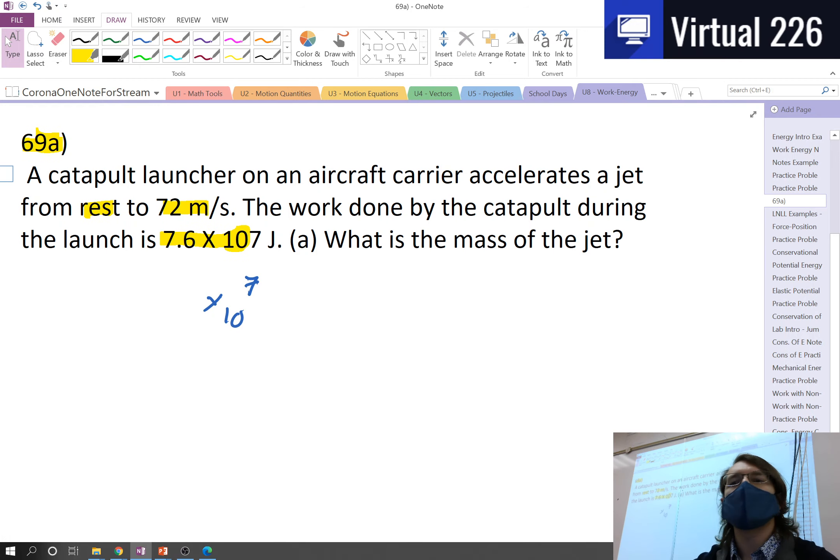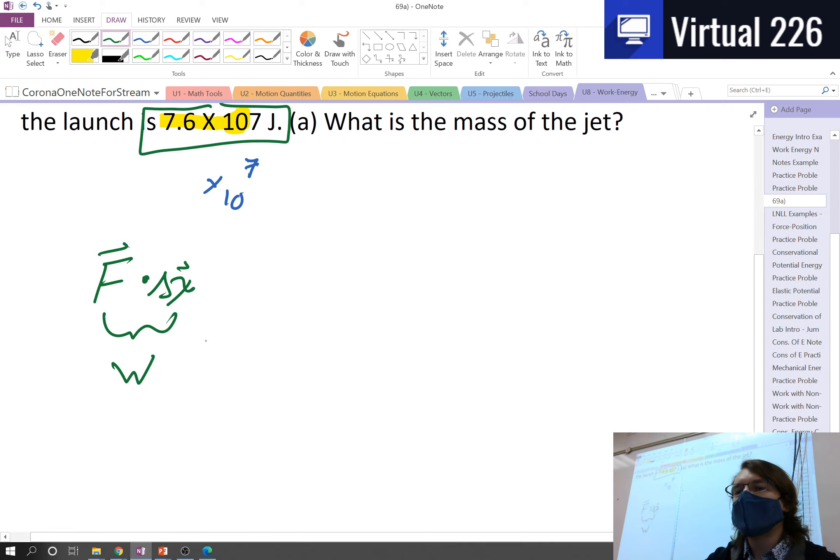And with our work energy formula, this is straightforward. We know our work energy formula is f dot delta x, but this f dot delta x, this is work. This is the 7.6 times 10 to the 7th joules. And we know that this has to equal the 1 half m vf squared minus vi squared.